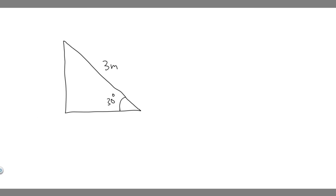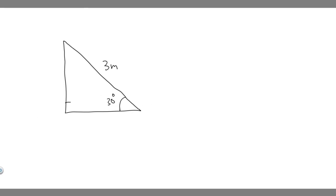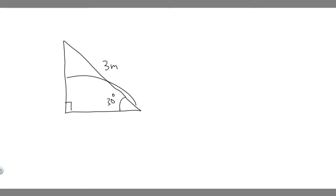So I went ahead and drew what's going on. We have this right triangle, and we know the hypotenuse length, which is the longest side, is 3 meters. We know one of its angles is going to be 30 degrees. What we're trying to do is solve for the side opposite the 30 degrees — this side right here — and we want to find its length. I'm just going to denote it with the variable y.